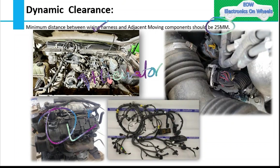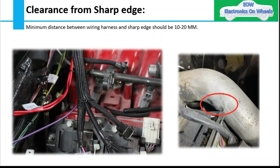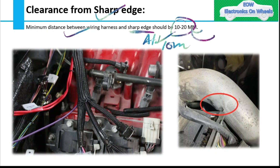This is also one of the favorite interview questions: clearance from sharp edges and sharp areas. The minimum distance between the wiring harness and a sharp edge should be 10 to 20mm. You need to keep at least 10mm, but some OEMs use 20mm as well. These are typical values.